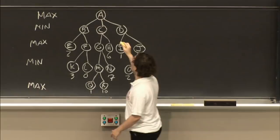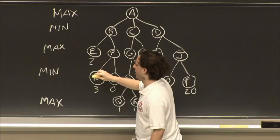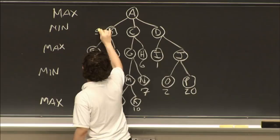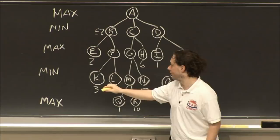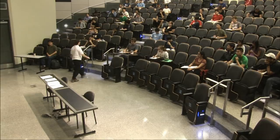At B, we're looking for the minimum of E and F. Having looked at E, our current minimum of E and F is just 2 for the moment — so B is going to be less than or equal to 2. Then we go down to F, which is a maximizer, and its children are K and L. What is going to be the Minimax value at F?